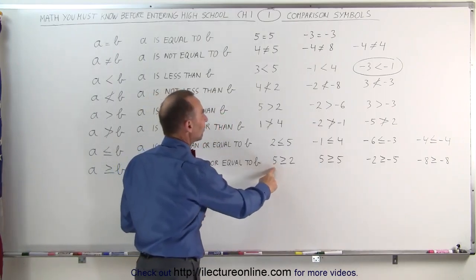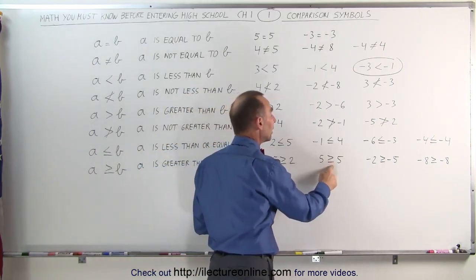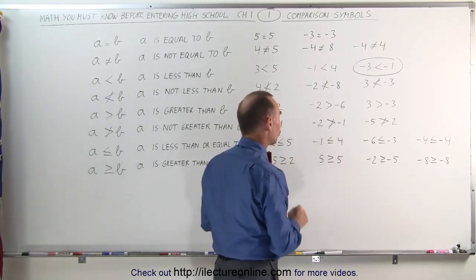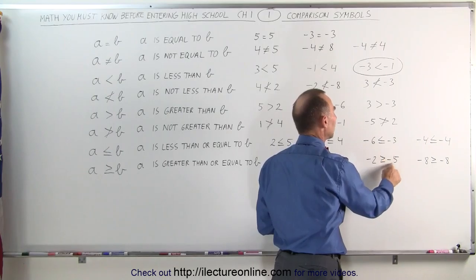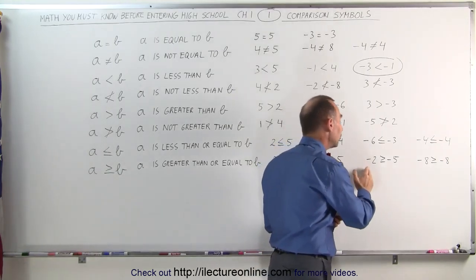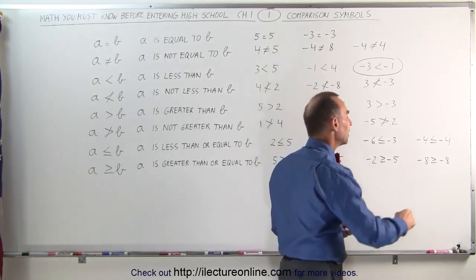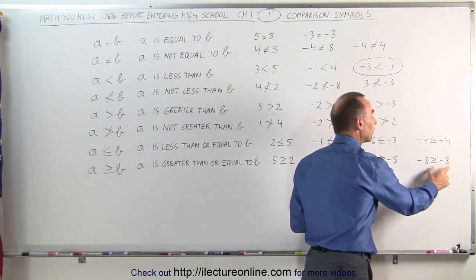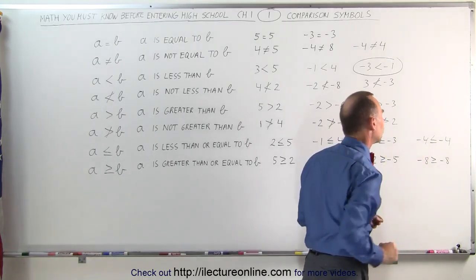Over here we have 5 is greater than or equal to 2. Since it's greater than, that's a true statement. 5 is greater than or equal to 5 — since it's 'or equal to,' an equal condition is also true, so 5 is indeed greater than or equal to 5. Negative 2 is greater than or equal to negative 5 — negative 2 is indeed greater than negative 5 because negative 5 is further to the left on the number line than negative 2. And negative 8 is greater than or equal to negative 8 — it is equal to negative 8, so this is a true statement because of the 'or' condition.